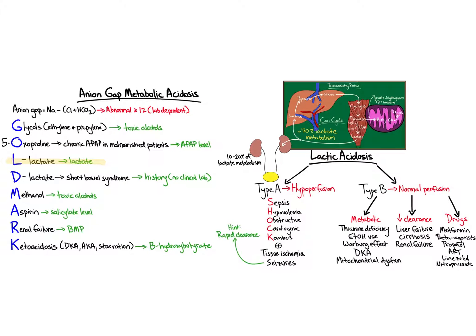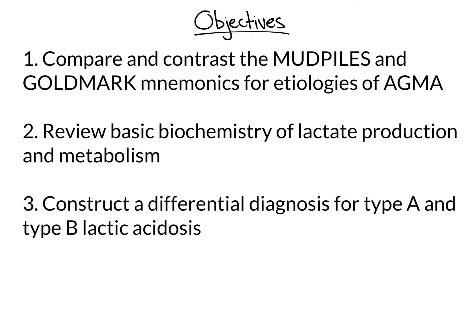Let's zoom back out and take one last look at our approach to anion-gap metabolic acidosis and lactic acidosis. In this session, we compared and contrasted the MUD PILES and GOLDMARK mnemonics for remembering etiologies of anion-gap metabolic acidosis, reviewed the basic biochemistry of lactate production and metabolism, and constructed a differential diagnosis for type A and type B lactic acidosis. Thank you for your participation.